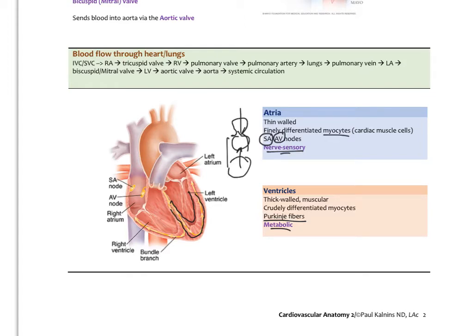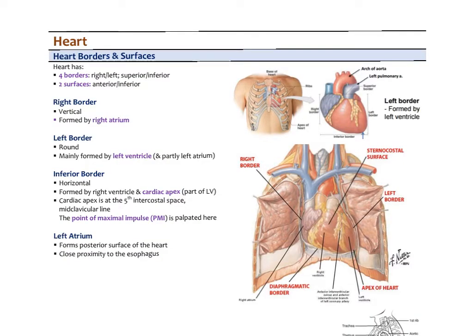We can think of the atria as reflecting more nerve-sensory function and the ventricles as more metabolic — smashed together to form the heart, making it a regulatory organ balancing nerve-sensory activity with metabolic activity. The heart has four borders — right, left, superior, and inferior — and two surfaces: anterior and posterior. The right border is vertical and is formed by the right atrium.